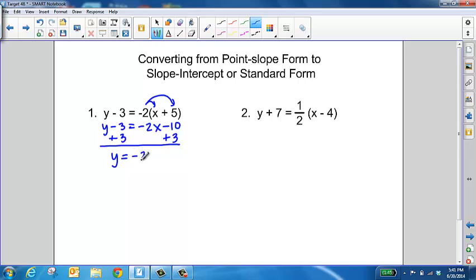So we're left with y equals negative 2x minus 7. So if you wanted to write an equation in slope-intercept form, you would stop here, at this point. This is in slope-intercept form.